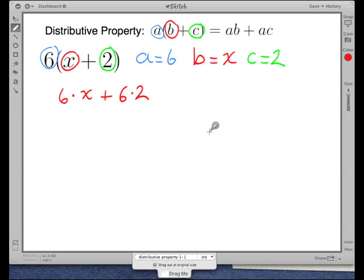Okay, so we've expanded our expression. Now we just have to simplify. 6 times x equals 6x. 6 times 2 equals positive 12. And so our expanded form is 6x plus 12.